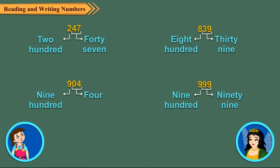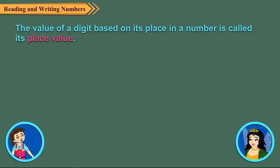Do you remember the term place value? Of course, yes! The value of a digit based on its place in a number is called its place value.